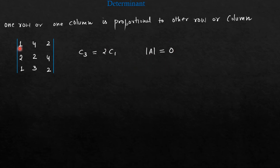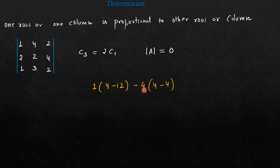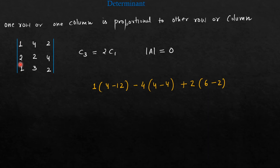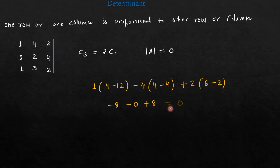Let us expand the determinant along the first row to prove this. For element 1: 1 into (4 into 2 minus 3 into 4) — wait, 4 minus 12, which is minus 8. For element 4 with a minus sign: minus 4 into (2 into 2 minus 1 into 4), that is minus 4 into (4 minus 4), which is 0. For element 2: plus 2 into (2 into 3 minus 1 into 2), that is 2 into (6 minus 2), giving 8. So minus 8 plus 0 plus 8 equals 0. Hence proved.